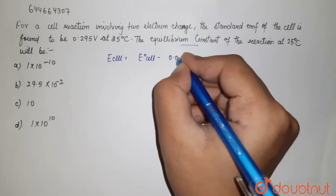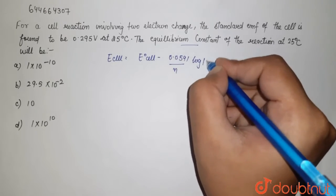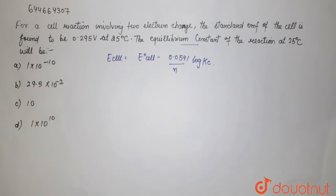E cell minus 0.0591 upon n, that is your electron change, log Kc. This is your equilibrium constant. So we have to find this.